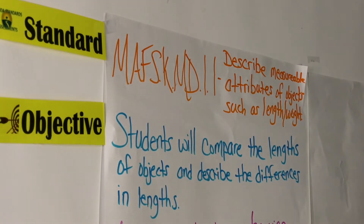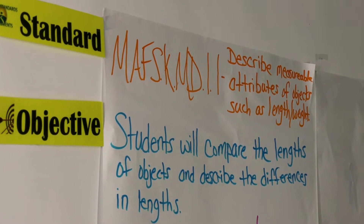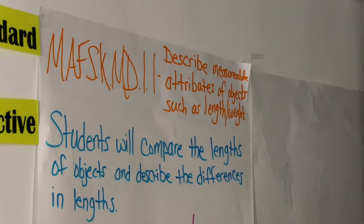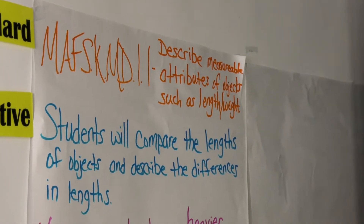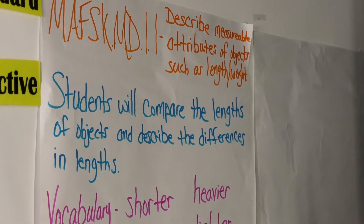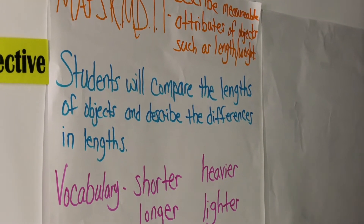Hello campers, welcome back to another day of learning about math. Today's lesson standard is MAFS-K.MD.1.2. You're going to describe measurable attributes of objects such as length or weight. Today's activity is pertaining to weight, where you will be comparing the weights of objects and describing the differences.